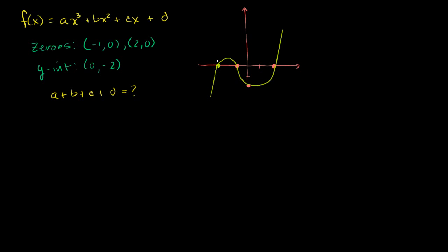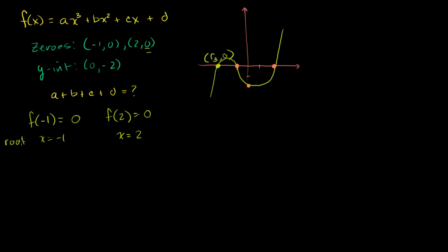There must be a third zero here. Let's call that third zero at the point (r3, 0), using the letter r for roots. Roots are the x-values of the zeros. So f(-1) = 0 means x = -1 is a root. Similarly, f(2) = 0 means x = 2 is a root. And we know there must be a third root at x = r3.